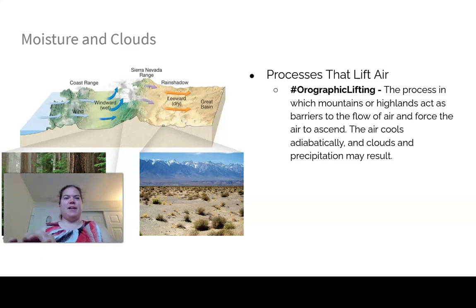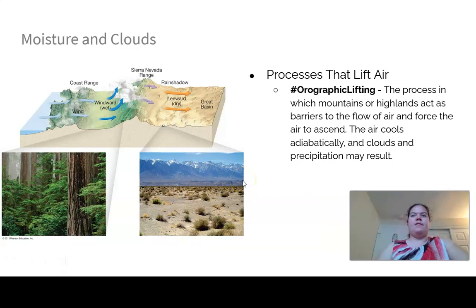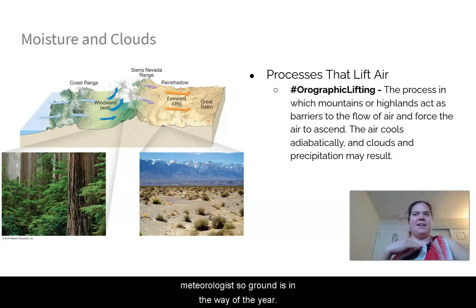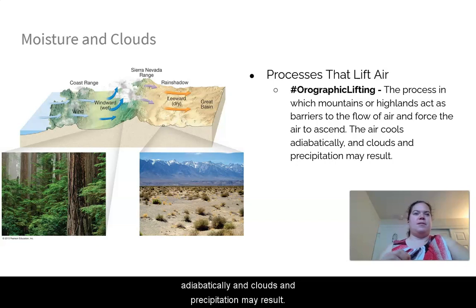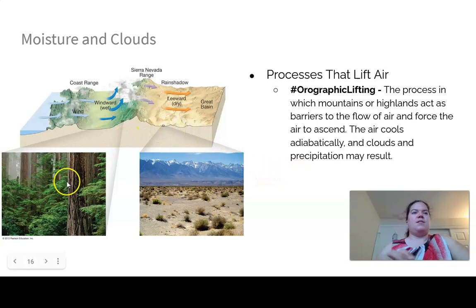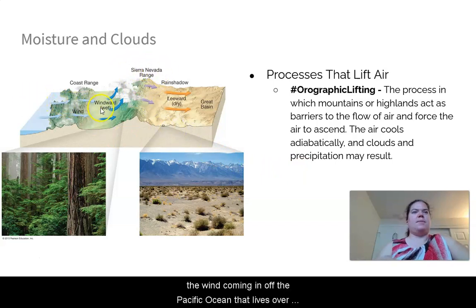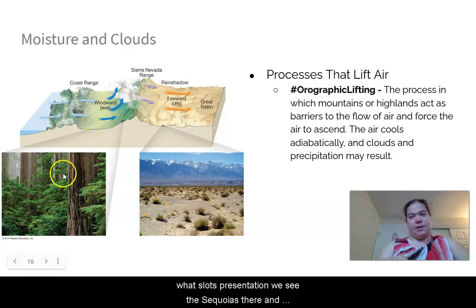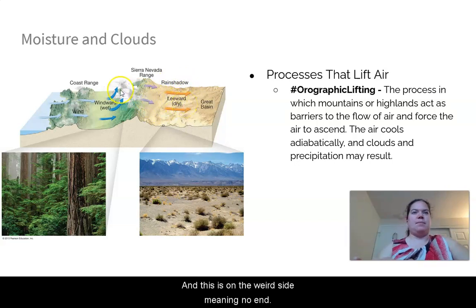Now we'll talk about lifting mechanisms to make clouds. The first process is orographic lifting — mountains or highlands act as barriers to airflow, forcing air to ascend. The air cools adiabatically and clouds and precipitation may result. The windward side of mountains gets all the precipitation; the leeward side is in a rain shadow and remains dry — like the Great Basin on the leeward side of the Sierra Nevada.